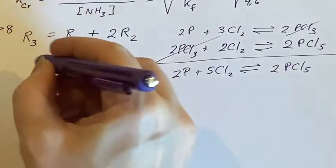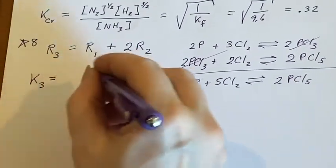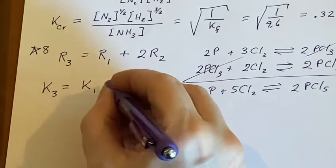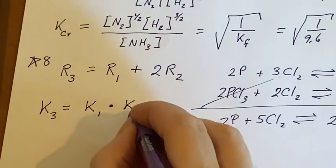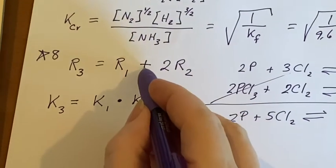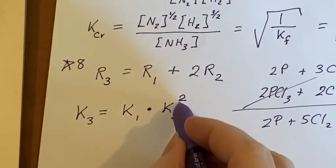If this is true, then I can say that K3 is going to be K1 multiplied by K2 squared. So this plus becomes a multiply, this two becomes an exponent.